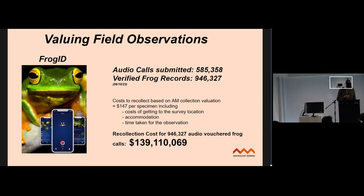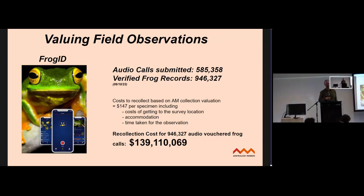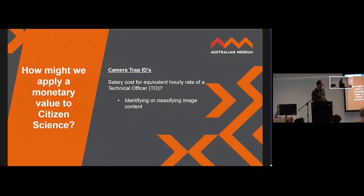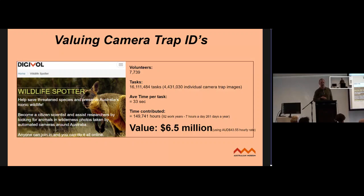For camera trap IDs, one way to value them is the salary cost equivalent to a technical officer going through all those images. Looking at Digivol Wildlife Spotter: 7,000 volunteers, 4 million camera trap images each classified four or five times, 33 seconds per task, 149,000 hours of time contributed — a value of $6.5 million. That's the contribution by volunteers.